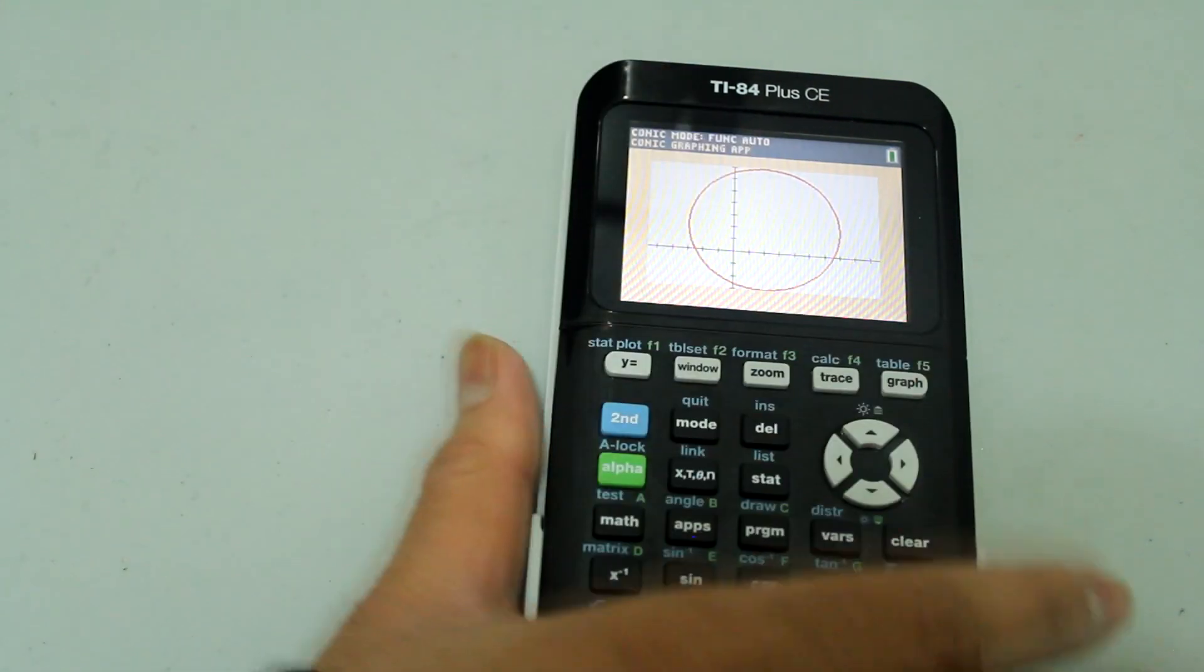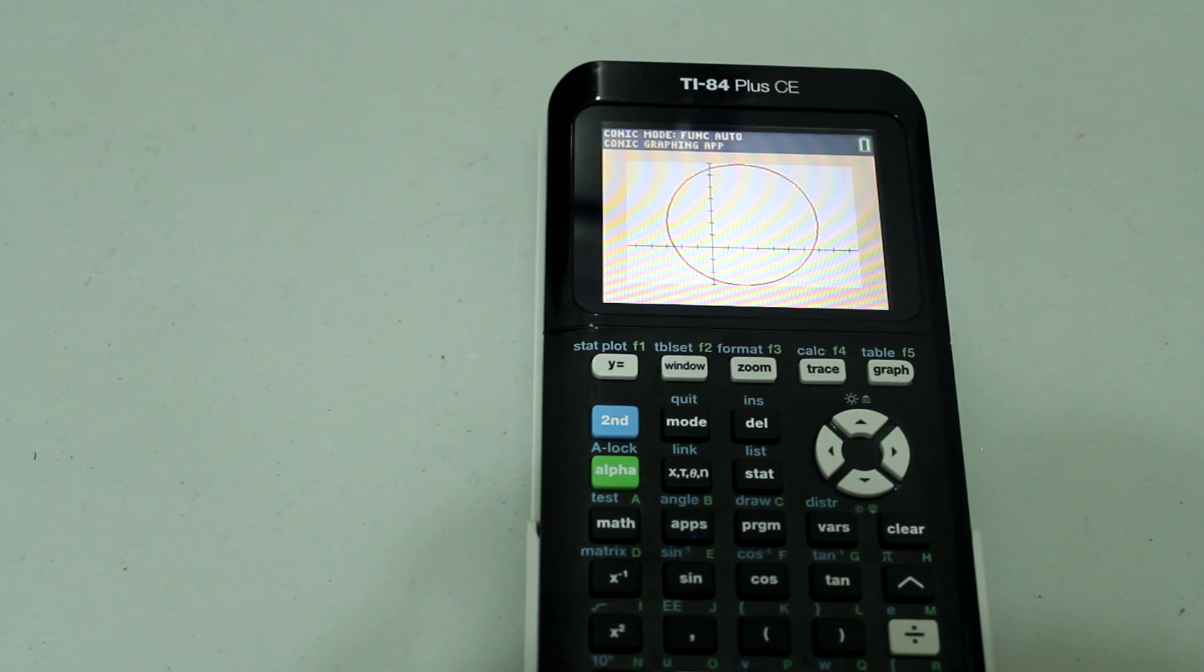And that's how you graph a circle on the TI-84 plus CE. I hope this video was helpful. As always feel free to leave a comment if you have any questions or any other comments.